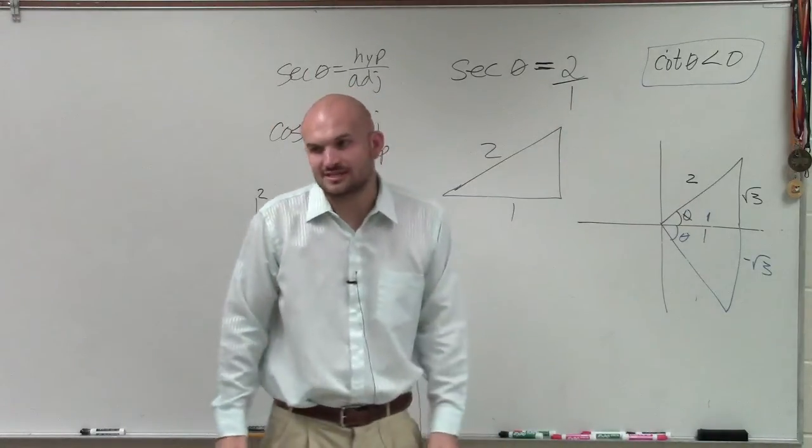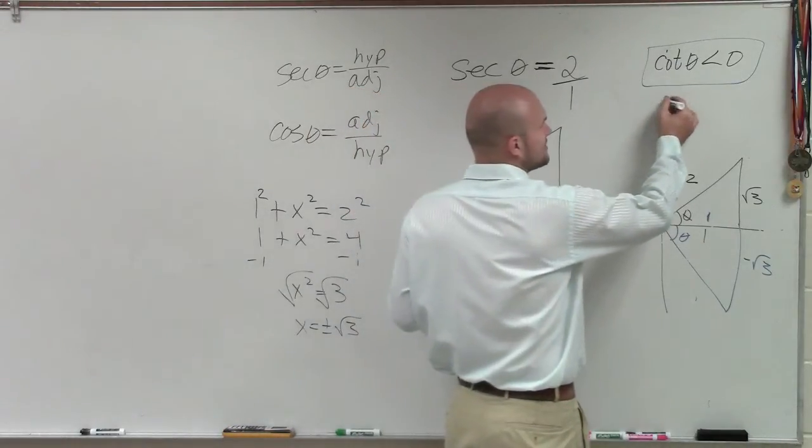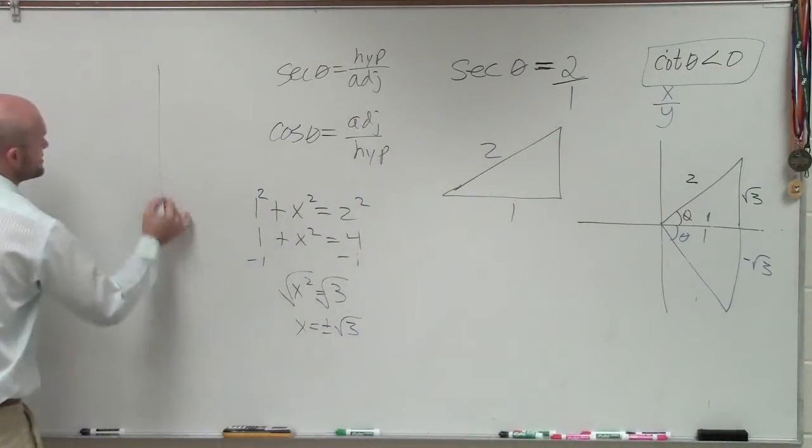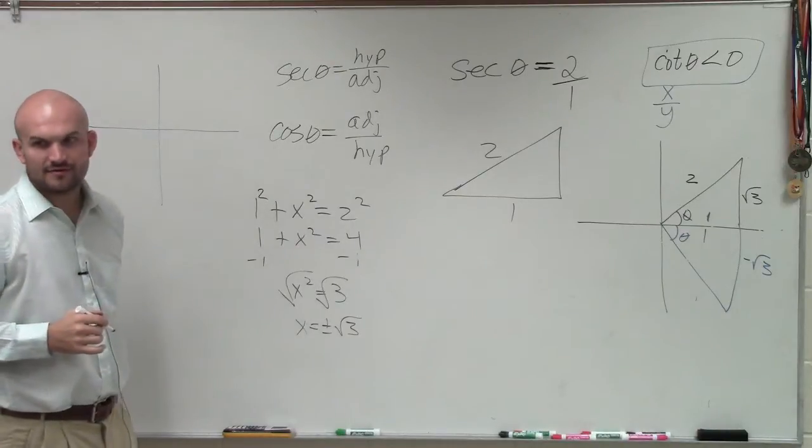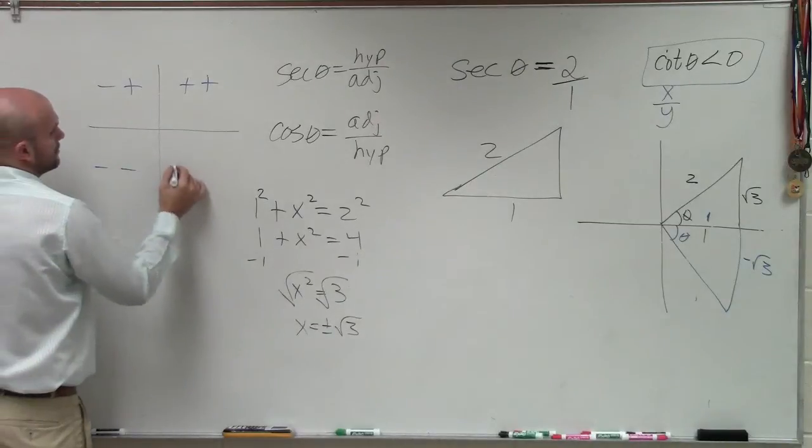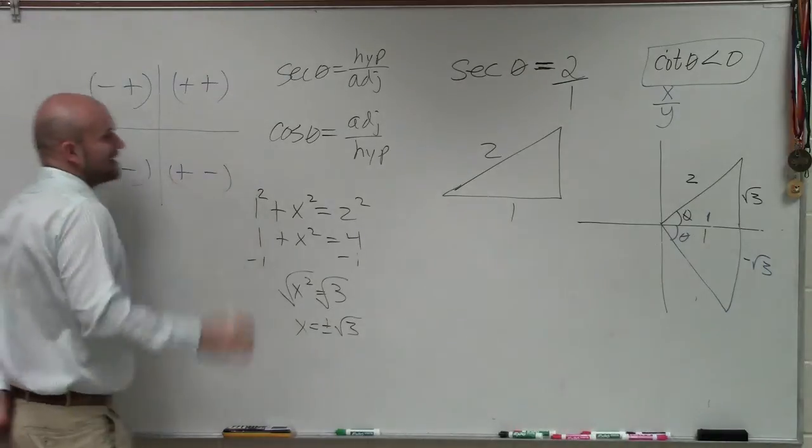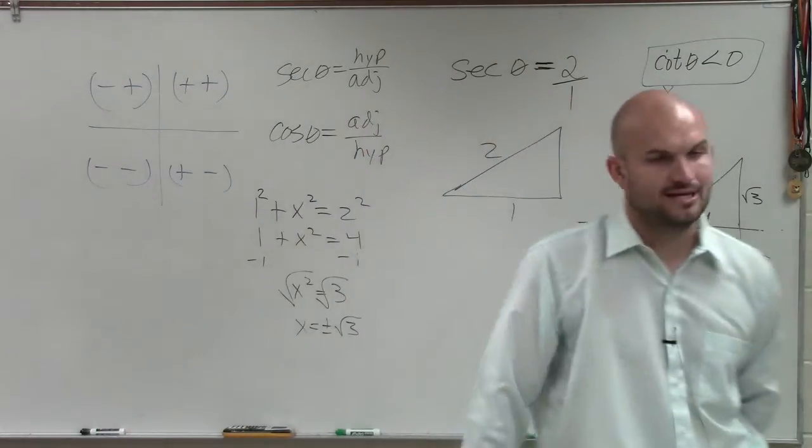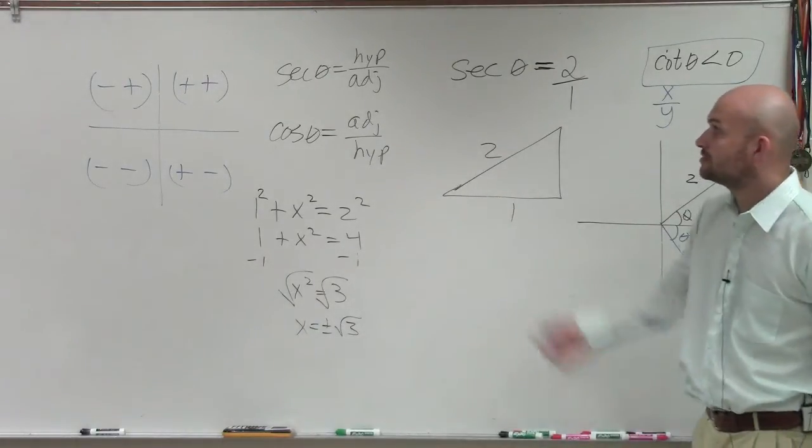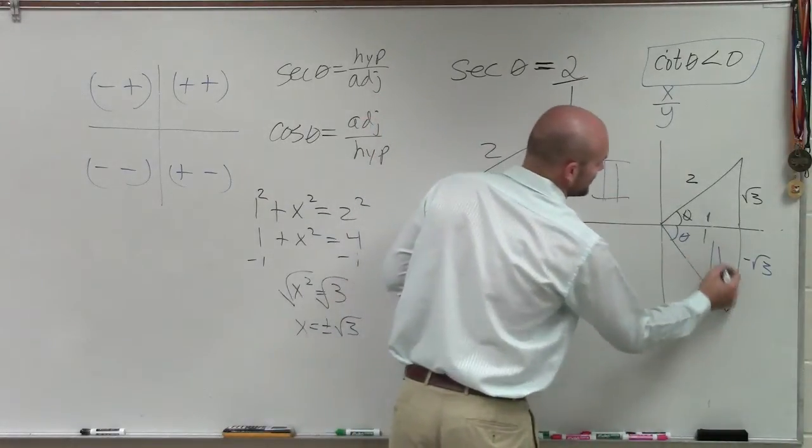So the constraint says cotangent of theta is less than 0. So remember cotangent represents x over y. So when you guys look at your quadrants, when is x over y going to be negative? If these are your x and y coordinates, when do you take your x and y coordinate, put x over the y, and you're going to get a negative value? Which one? The second and the fourth.